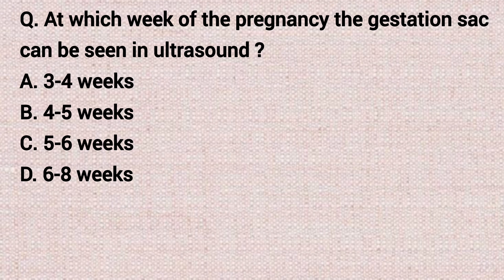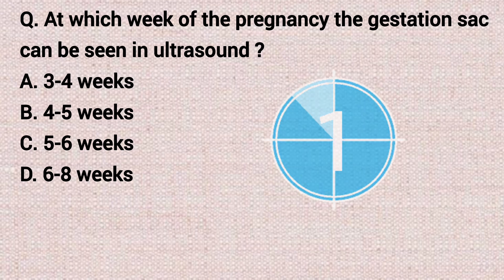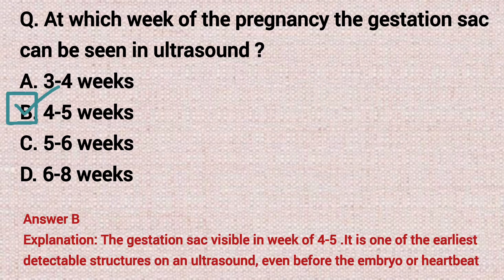The next question: at which week of pregnancy can the gestational sac be seen on ultrasound? Option A: three to four weeks. Option B: four to five weeks. Option C: five to six weeks. Option D: six to eight weeks. The correct answer is option B, four to five weeks.